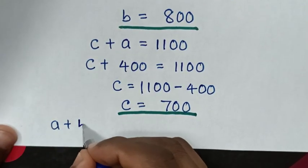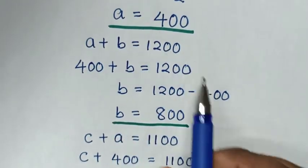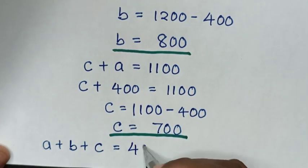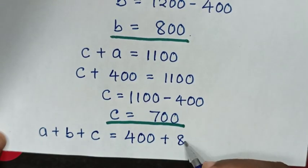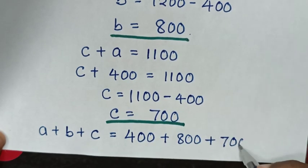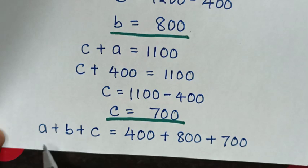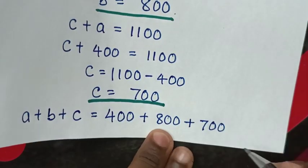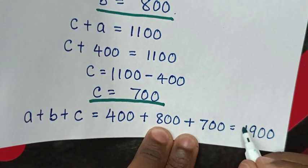Our problem asks to find the value of A plus B plus C, which equals 400 plus 800 plus 700. Then 400 plus 800 is 1200, and 1200 plus 700 is 1900. So A plus B plus C is equal to 1900. Therefore, this is our final answer.